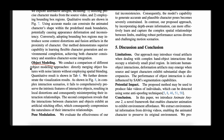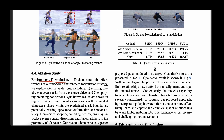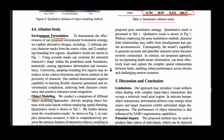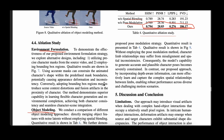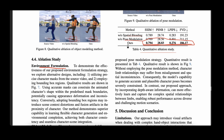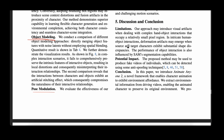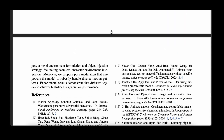They also ablate object modeling, showing in table four that without spatial blending and without post modulation, performance is lower. Including both spatial blending and post modulation leads to better performance, indicating the significance of both contributions.